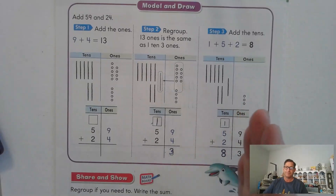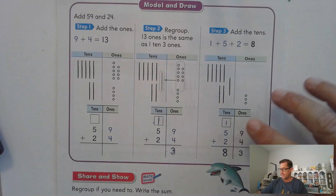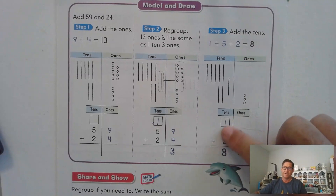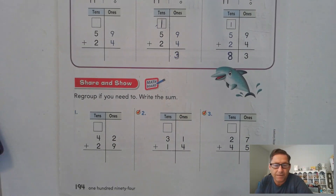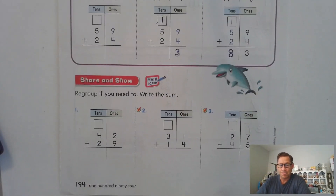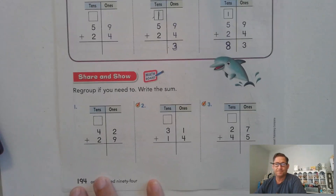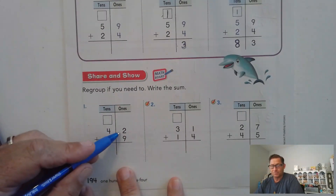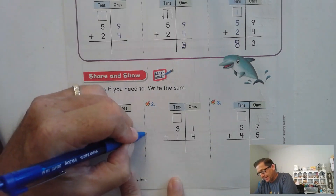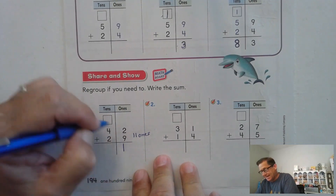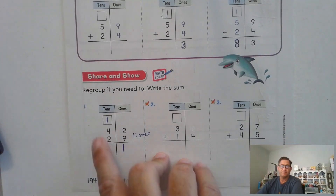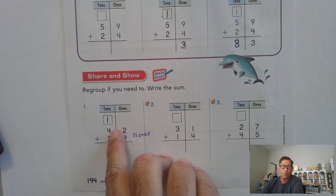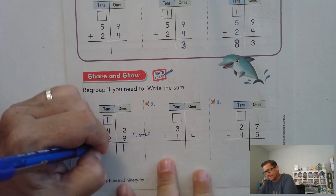Notice that we line up our place value — ones are stacked together, tens are stacked together. It's really important that we line up our place value. Let's share and show — regroup if you need to and write the sum. 9 and 2 — that's 11 ones, right? So 9 and 2 is 11 ones. We would trade 10 of those ones for a 10. In 11 ones, we have 1 ten and 1 one. How many tens do we have? 4, 5, 6, 7 — 71.